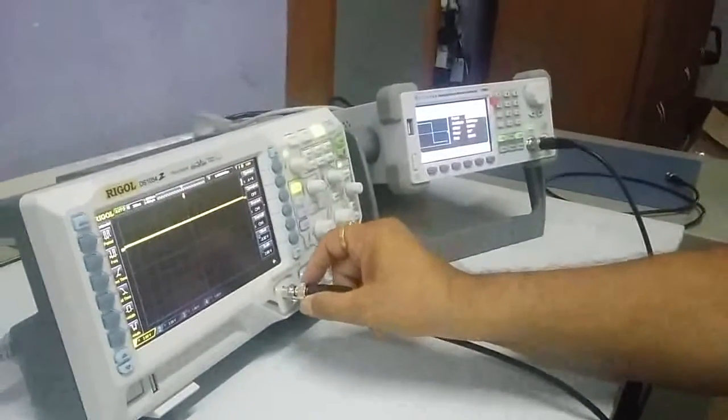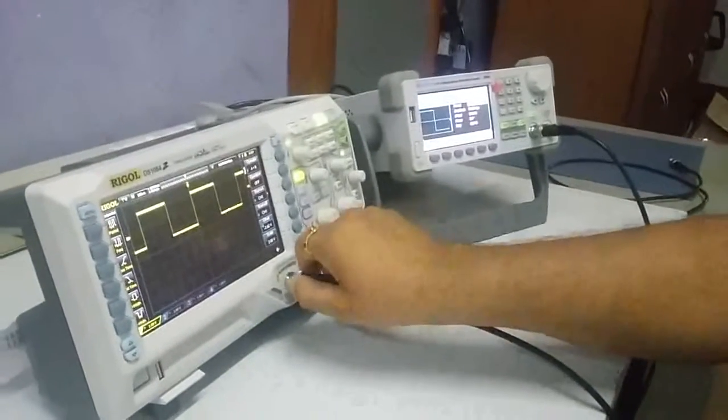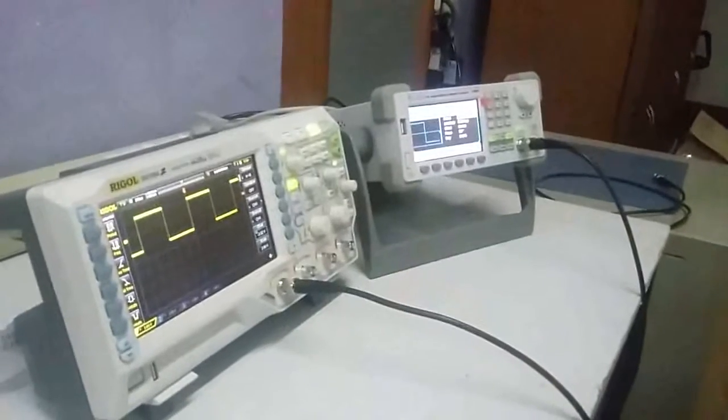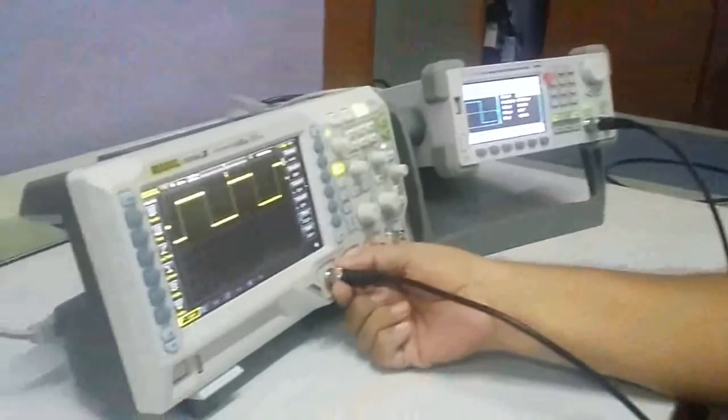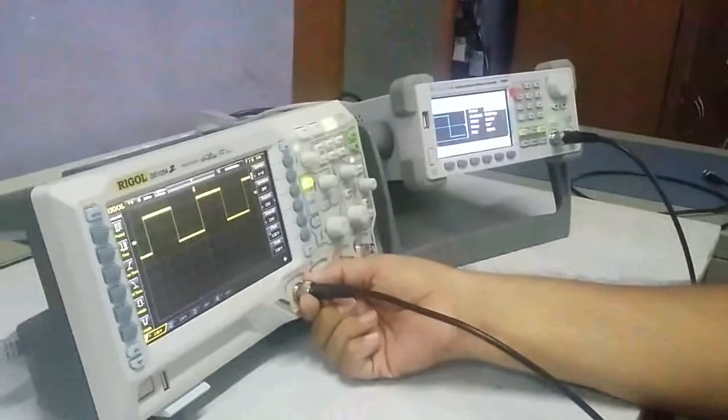We can also demonstrate by using a function generator the math function of the Z series DSO. Now I have connected a square wave from a generator to the digital storage oscilloscope.